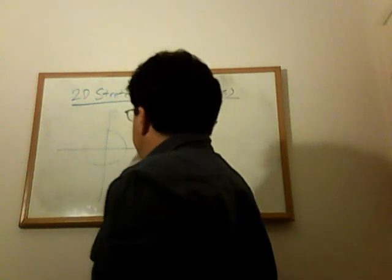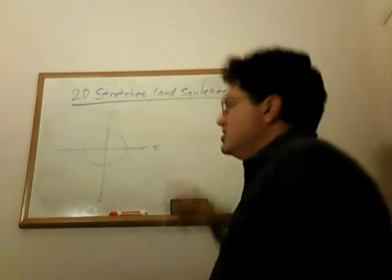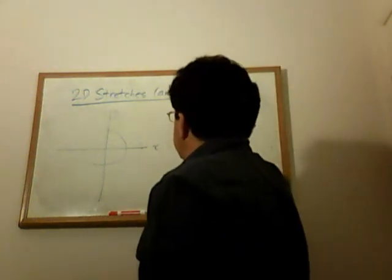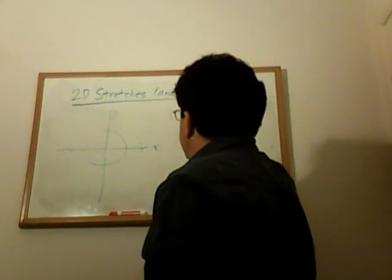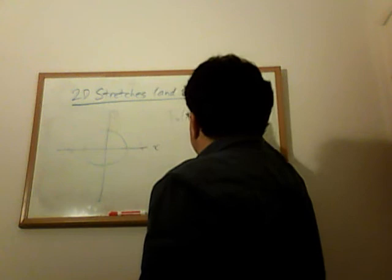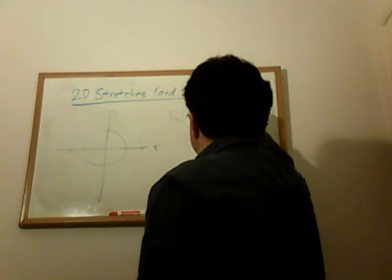So all, everything gets stretched in the X direction, and what that looks like as a matrix is T_X(K) equals K 0 0 1.